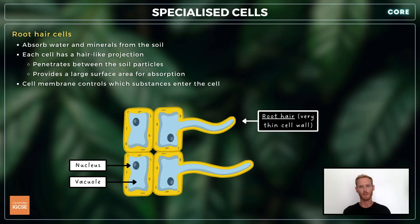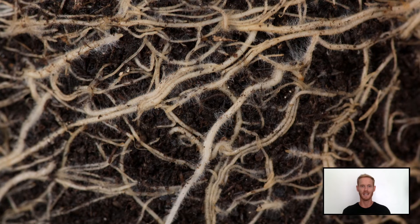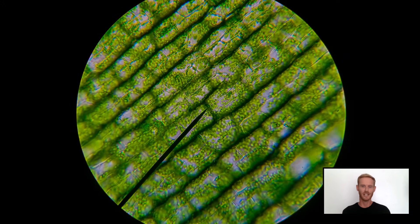Root hair cells in plants are specialized to absorb water and minerals from the soil. The hair-like projection on each cell penetrates between the soil particles and provides a large surface area for absorption. In addition, the cell membrane is able to selectively control which substances enter the cell. Finally, palisade mesophyll cells are found just under the surface or upper epidermis of plant leaves and are densely packed with chloroplasts. Their role is to convert light energy into glucose via photosynthesis.